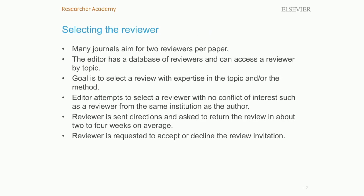The next step in the review process is for the editor to select reviewers for the paper. Often journals will aim for a minimum of two reviews for a paper. The editor may select more reviews if the reviews come back with very different opinions, but generally the goal is two reviews per paper. Editors have a database of reviewers accessible in the electronic system, and the goal is to select reviewers who have expertise in the topic and those who have expertise in the research method or the statistics used in the paper.